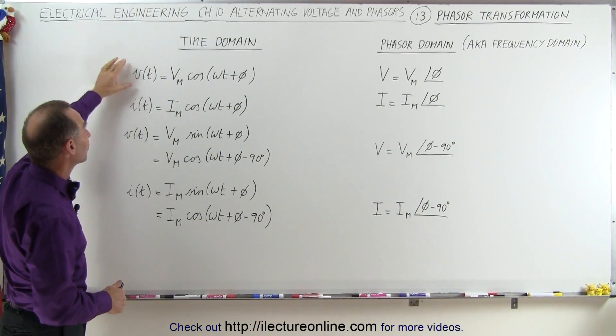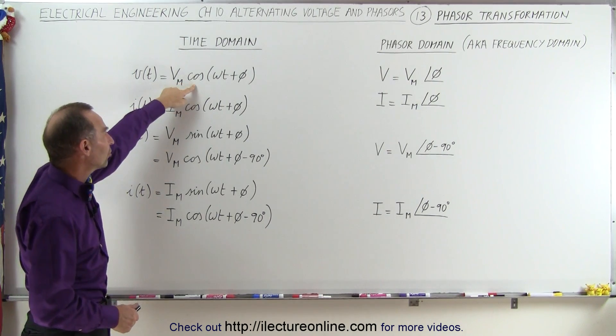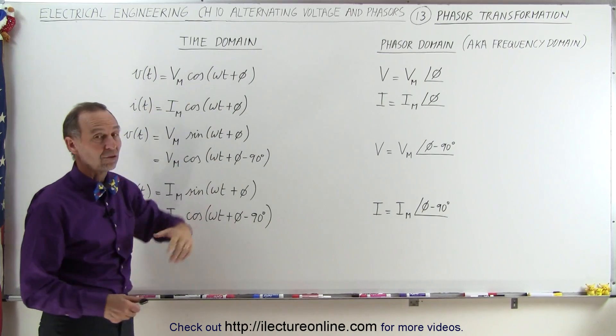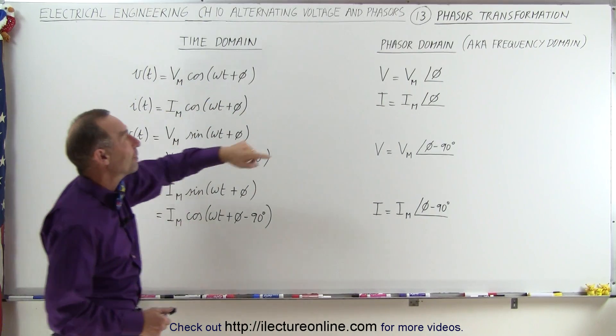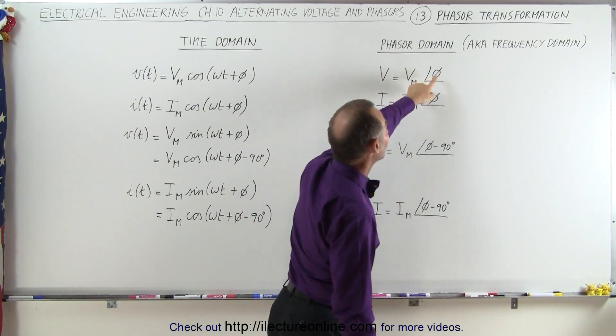If we start off with having the voltage expressed as a function of time, in terms of the maximum voltage times the cosine of omega t plus potentially a phase angle, then when we go to the phasor domain, this would be the vector quantity which is equal to the magnitude and the phase angle.